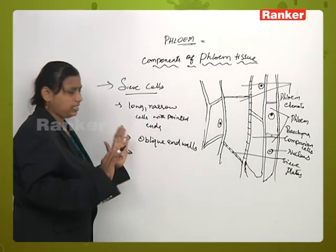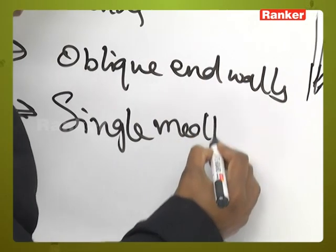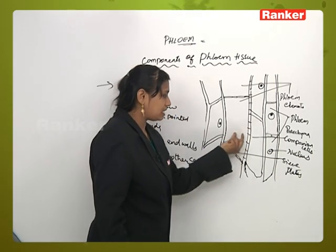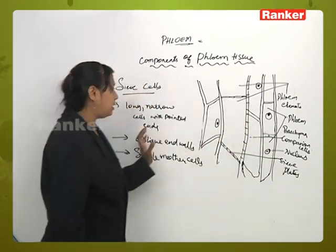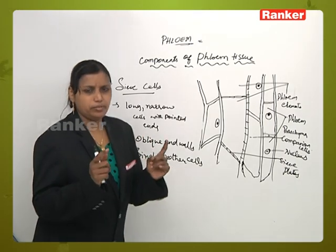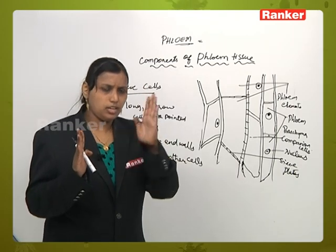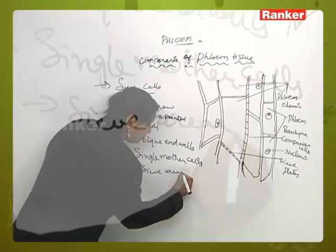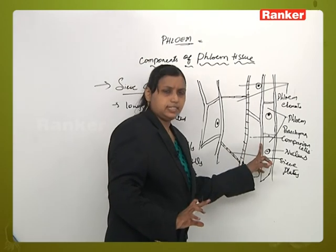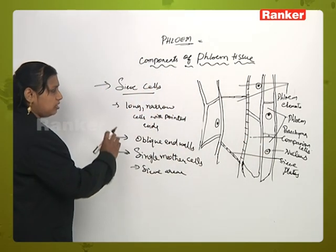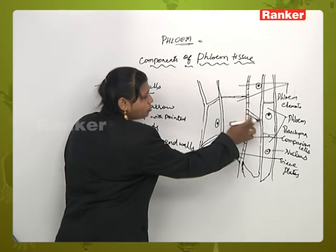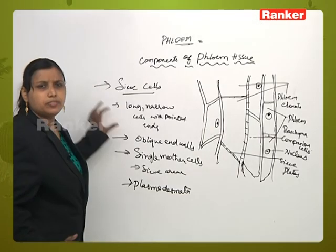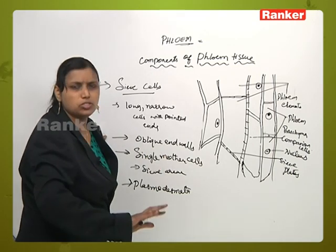The end walls are oblique. These sieve cells are formed from a single mother cell. The protoplasm of adjacent cells of phloem is connected to the other cell through the protoplasmic content present between the two cells. The connecting link between the protoplast of one sieve cell and another is because of the presence of sieve areas — this occurs because of the protoplasm. The connecting component between one cell and another is the plasmodesmata.